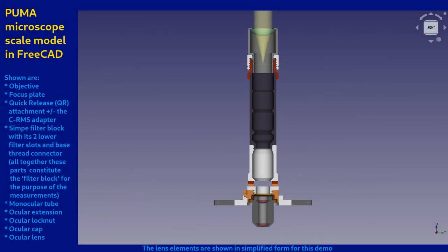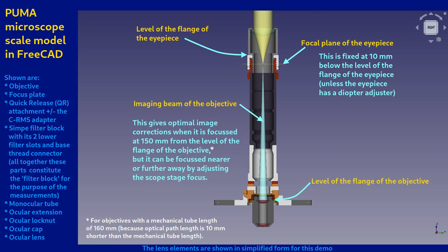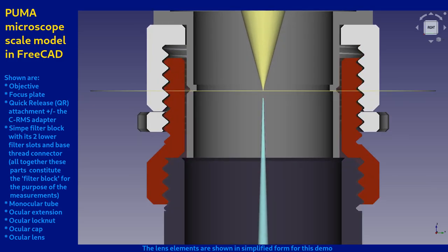While reviewing the Puma CAD models, I realized that the design I was using for all the ocular head configurations above the filter block caused the focal plane of the eyepiece to be placed 1mm above where it optimally ought to be. Another way of saying this is that the optimal focus plane of the image from the objective is 1mm below the ocular's focal plane. This is illustrated in the figure.